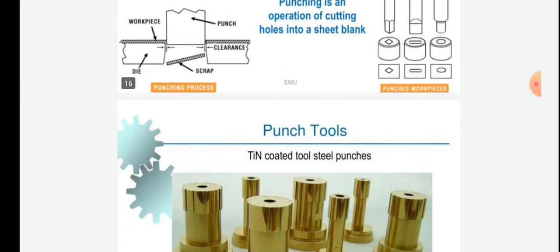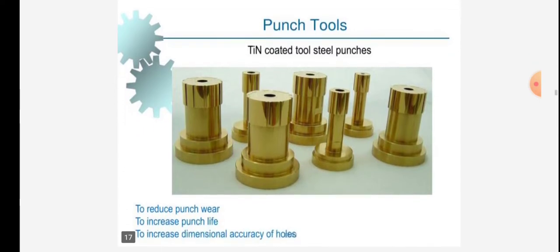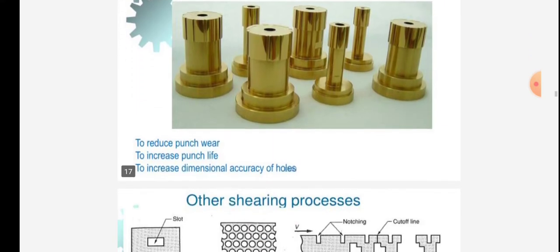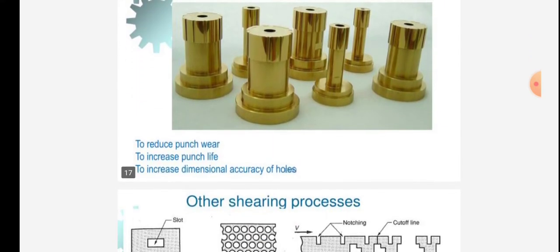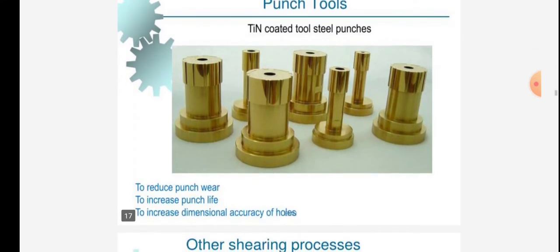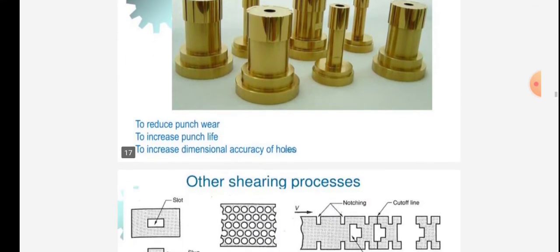Punch tools: tin-coated tool steel punches are given to reduce punch wear, to increase punch life, and to increase dimensional accuracy of the holes. These tin-coated tool steel punches are given in the figure.